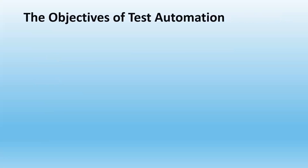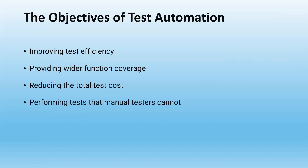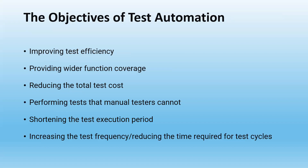Let's look at test automation objectives. The first one is improving test efficiency. The second is providing wider functional coverage. Reducing total cost is the next one. Another objective is performing tests that manual testers cannot do, and also shortening the test execution period. We can increase test frequency and reduce the time required for the test cycle, because since it's automated we don't need to spend much time on it — we can execute the suite against various versions with the same functions.